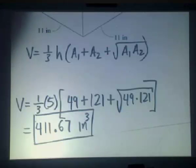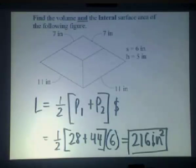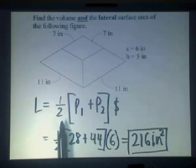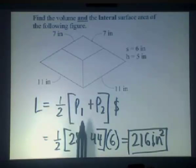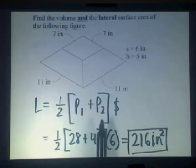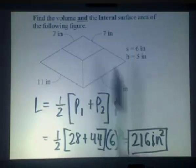Now let's talk about the lateral surface area. The formula for the lateral surface area is given as one-half times the perimeter of the small base, plus the perimeter of the large base, times s, which is the slant length there.